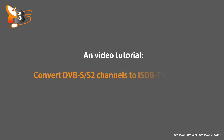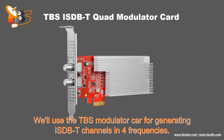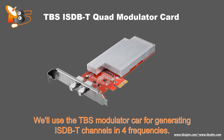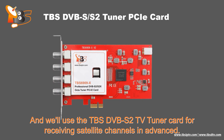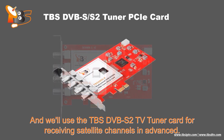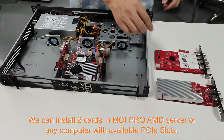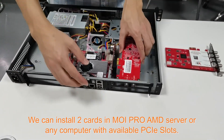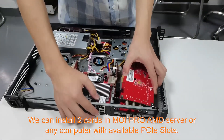Here is a sample tutorial for converting satellite channels to ISDBT channels. We'll use the TBS modulator card for generating ISDBT channels in four frequencies, and we'll use the TBS-DVBS2 TV tuner card for receiving satellite channels. We can install two cards in an AMD server or any computer with an available PCIe slot.